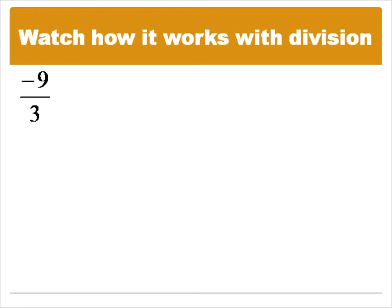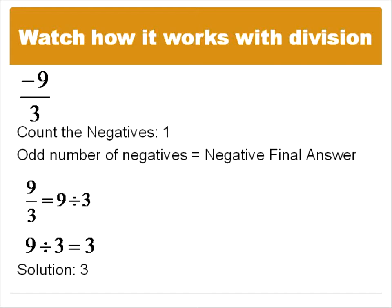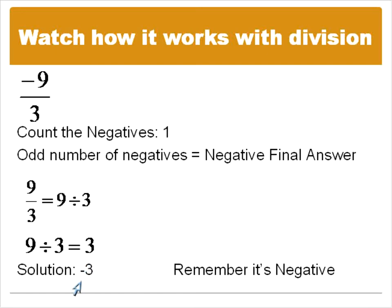Let's try it out with division. I wrote this as a fraction, but all a fraction means is the top divided by the bottom. We're going to start by counting the negatives — there is one negative number, negative nine. Because there's an odd number of negatives, there will be a negative for the final answer. Nine over three is the same as saying nine divided by three. We've changed everything to positive numbers — nine divided by three is three. But we have to remember we have that negative final answer because there is one negative number in the question, so we change that three to negative three. We don't have to worry about what negative nine divided by three is — we just count the negatives, move them out, and then move them back in at the end.